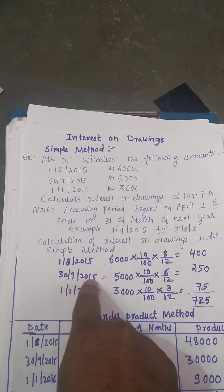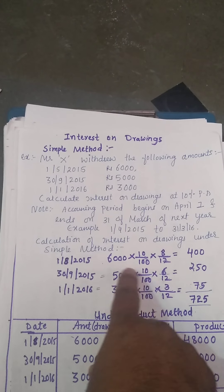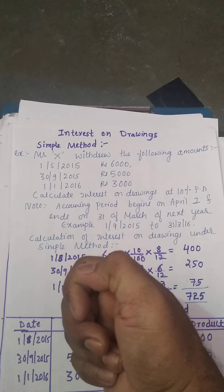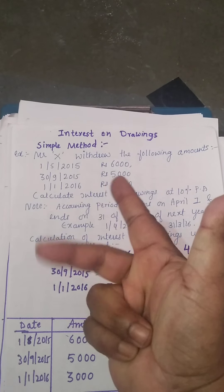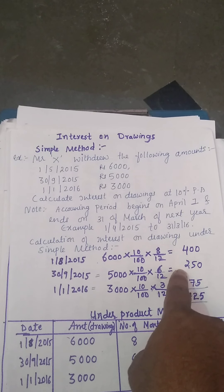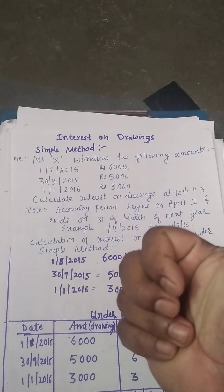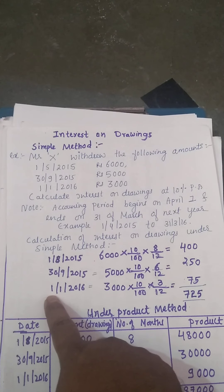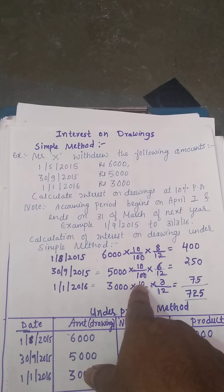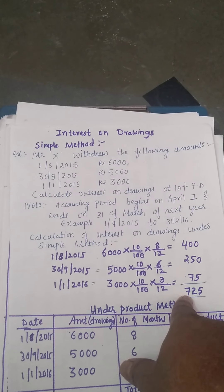The next amount of Rs. 5000 was withdrawn on 30/9/2015 at the same 10% rate. Since it is the 30th of September, we count: October, November, December, January, February, March — that is 6 months. Interest = 5000 × 10% × 6/12 = Rs. 250. The third drawing is on 1/1/2016 for Rs. 3000. Since it is the beginning of the month, we count January, February, March — 3 months. Interest = 3000 × 10% × 3/12 = Rs. 75. Total interest on drawings for Mr. X = Rs. 725.